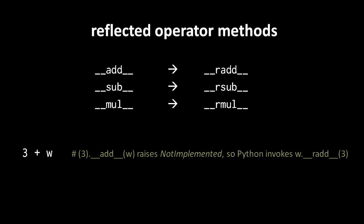So here for example, if we have the code 3 plus w, assuming w is the instance of some class we've defined, well first Python will invoke the add method of the int object and w will get passed as the argument. But the add method in this case will raise the not implemented exception because the standard int method isn't defined to add together a standard int object, the number 3 here, with some instance of a class you've defined.